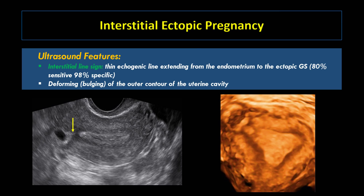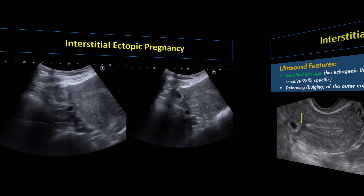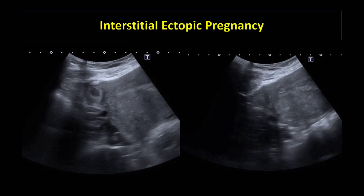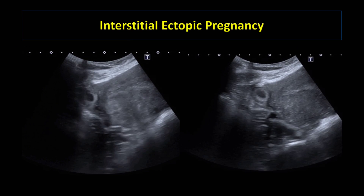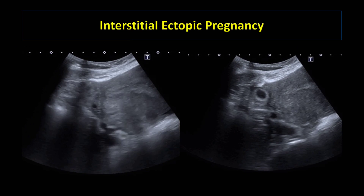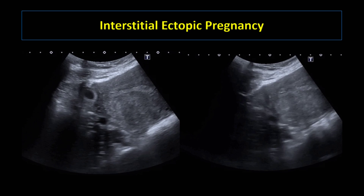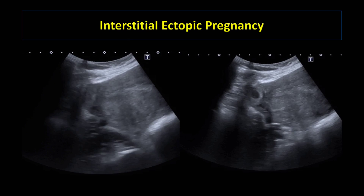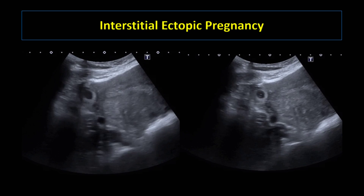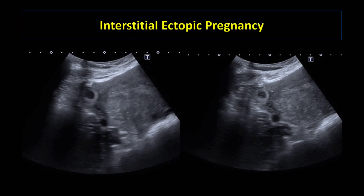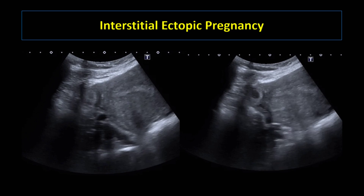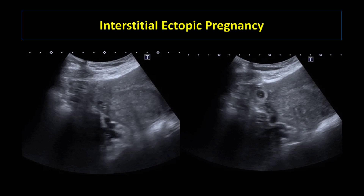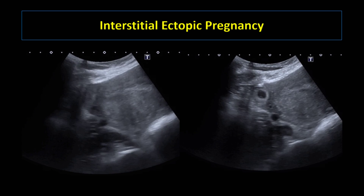On 3D ultrasound, there is a deforming or bulging of the outer contour of the uterine cavity. As seen in this case of interstitial ectopic pregnancy, the gestational sac is located at the right outer edge of the uterine cavity more than 1 cm from the endometrium, surrounded by a thin layer of endometrium measuring about 3 mm. If we carefully look, we can see a tiny yolk sac inside the gestational sac, confirming the diagnosis of ectopic pregnancy.